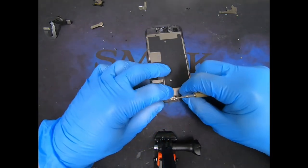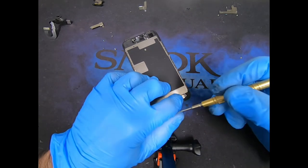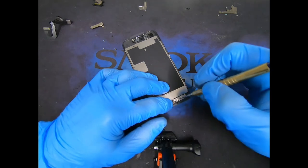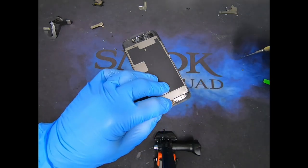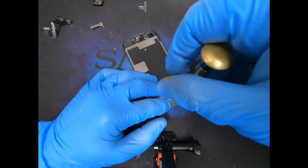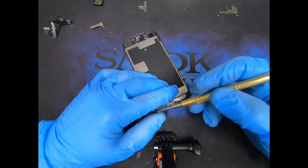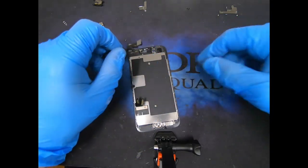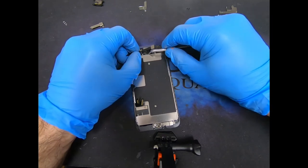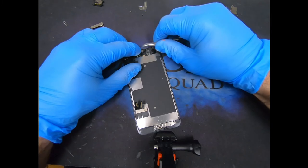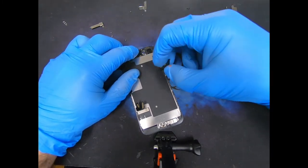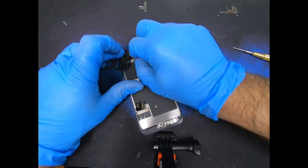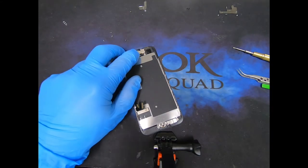We're going to go ahead and put our home button plate on. Grab our screws. Next we're going to get our earpiece speaker. I'm going to line it up. Put the proximity sensor in its place. Grab our earpiece speaker. Fold the camera over it. Grab your metal plate. Put it over the speaker. Put your screws on.